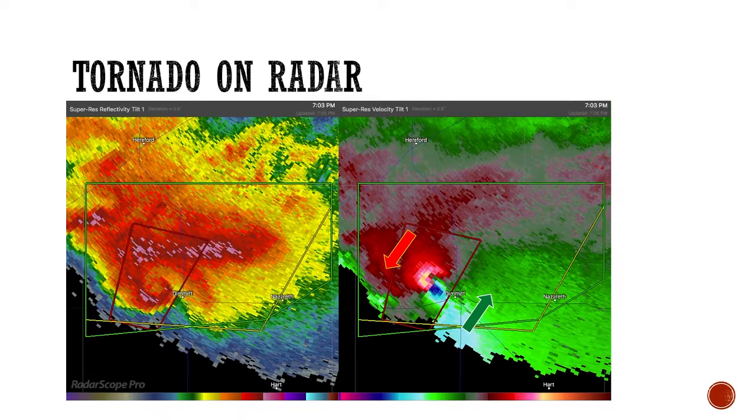You can actually see tornadoes on radar. So here is actually another Oklahoma example. On the left, you see what's called reflectivity, basically how heavy the rain is. And you can sort of see that hook shape there by dimmit, where the radar has that hook signature. That's actually because the rain is wrapping into the tornado and wrapping into what's called the mesocyclone, what's the rotating part of the thunderstorm.